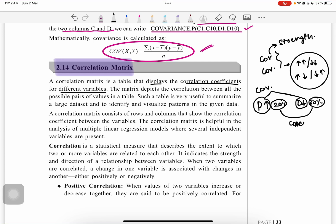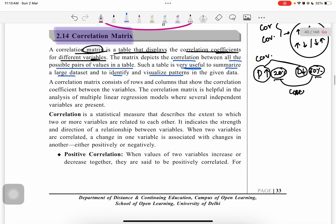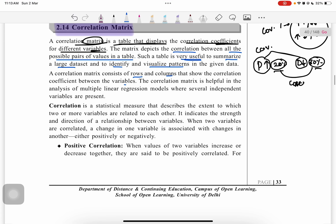Furthering the discussion about correlation matrix, the correlation coefficients for different variables are displayed in a table called correlation matrix. This matrix displays the correlation between all possible pairs of values. Such a table is very useful to summarize large data sets, to identify and visualize patterns in the given data set.